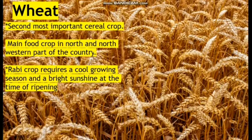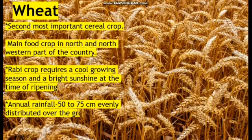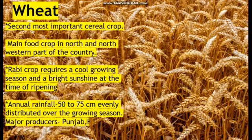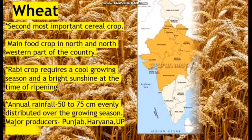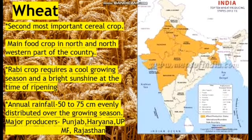Winter is well experienced only in the northern part of India. The southern part of India experiences Kharif season throughout the year because winter is very mild there — we can take below Maharashtra as the southern part of India. Wheat requires annual rainfall of 50 to 75 centimeters. The major wheat producing states are Punjab, Haryana, Uttar Pradesh, Madhya Pradesh, and Rajasthan.